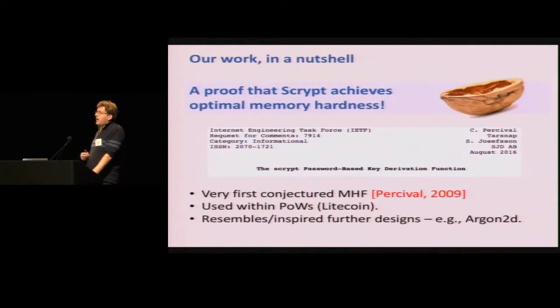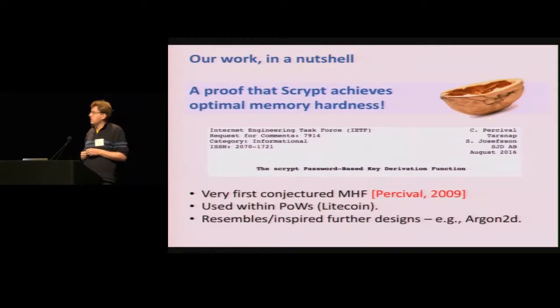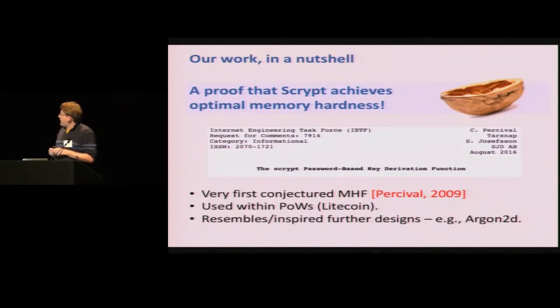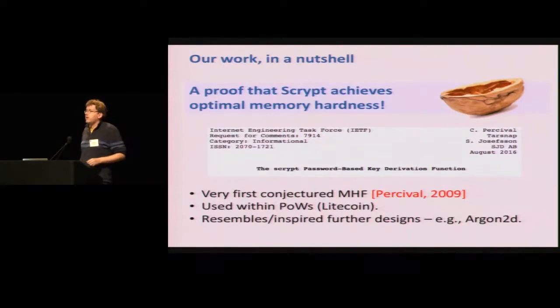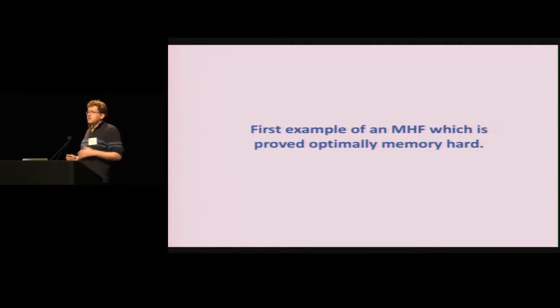The main message is positive. So we provide a proof that the S-crypt function is optimally memory hard, or ideally memory hard using the language from the previous talk. And this is particularly surprising at first because S-crypt was the very first candidate memory hard function. It was introduced by Colin Percival in the very same paper in 2009 that introduced the notion of memory hard functions, as we know it now. It has found usage, so it is the object of a recently published RFC. It is also used within cryptocurrencies for proofs of work. It's using Litecoin and other lesser cryptocurrencies. And also, it inspires other designs. So you can find ideas from S-crypt, for example, in Argon2D, one of the two winners of the password hashing competition. And let me stress really that this is interesting in practice, but also from a theoretical standpoint, this is the first example of memory hard functions that we can prove optimally memory hard. So even in theory, not just in practice.